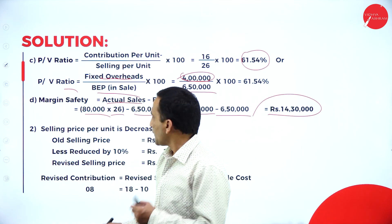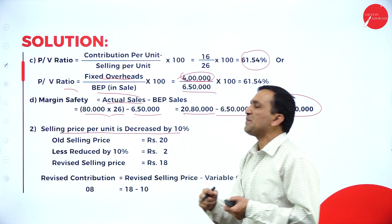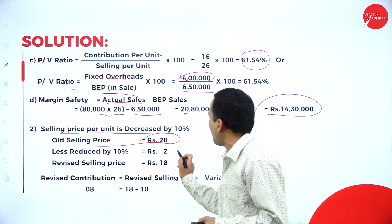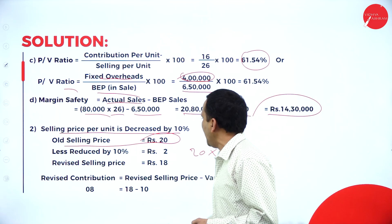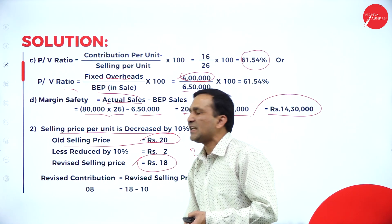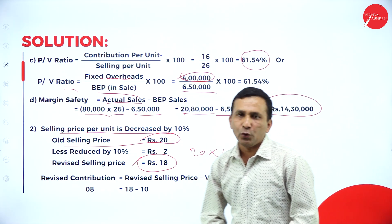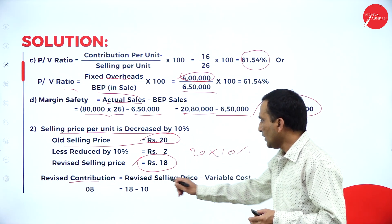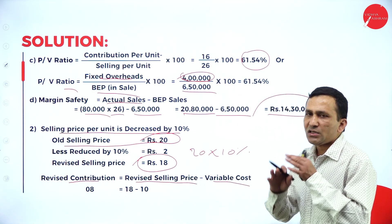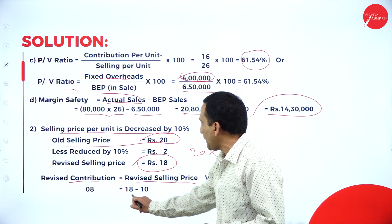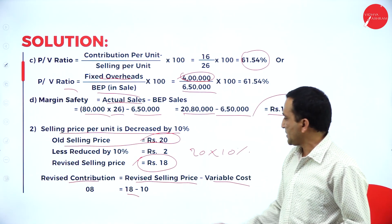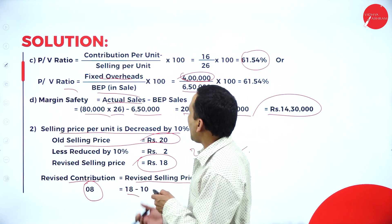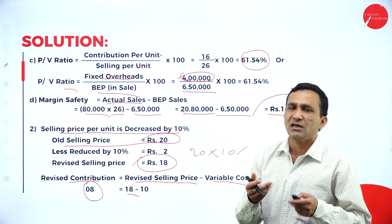Moving to the next question: selling price per unit decreases by 10%. Old selling price is ₹20; 10% of ₹20 = ₹2. New selling price = ₹20 − ₹2 = ₹18. Revised contribution = new selling price − variable cost = ₹18 − ₹10 = ₹8.